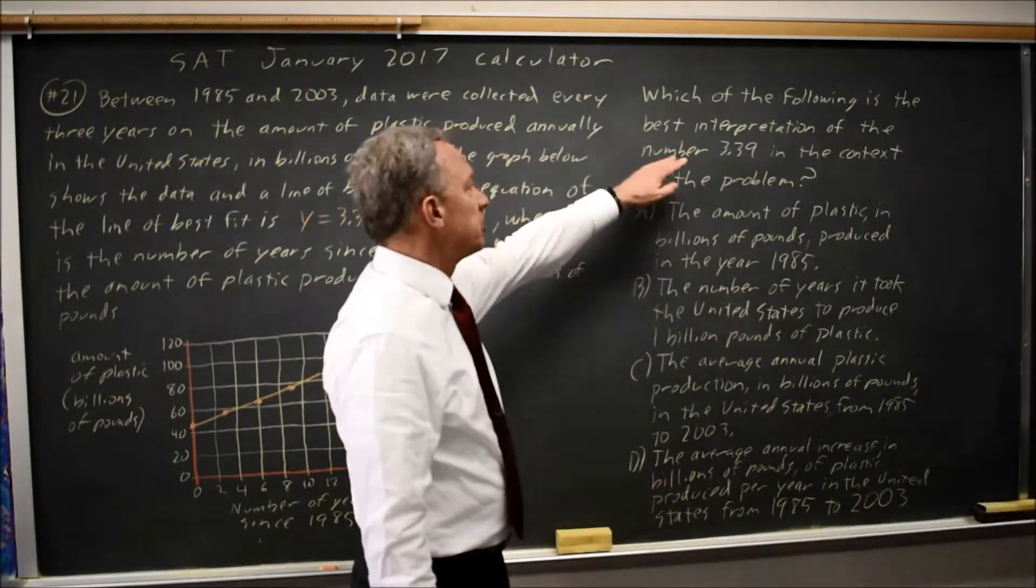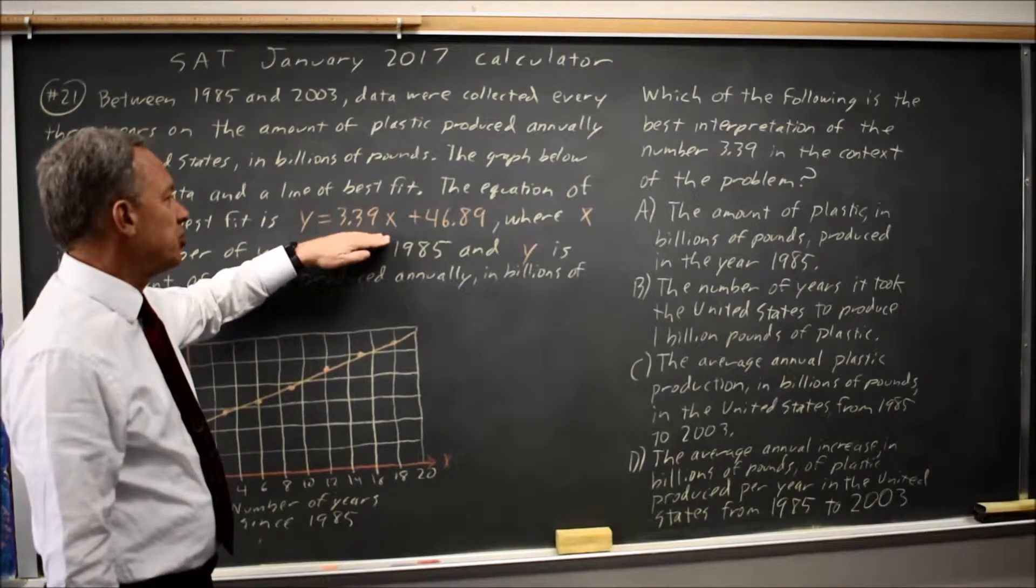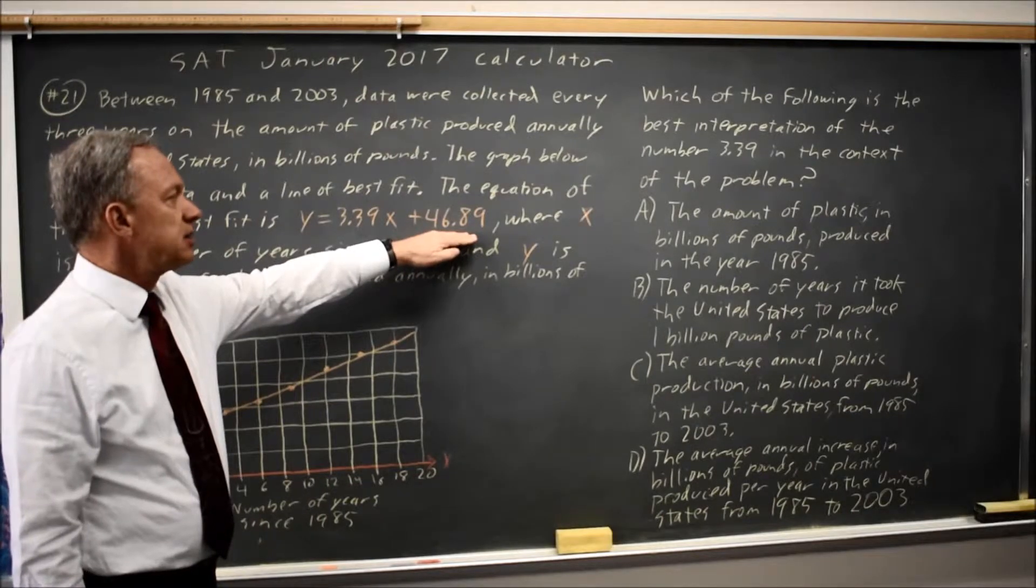And the question is, which is the best interpretation of the number 3.39 in the context of the problem? 3.39 is the slope. 46.89 is the Y intercept.